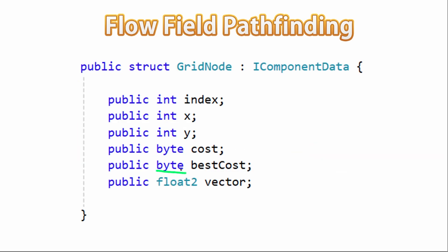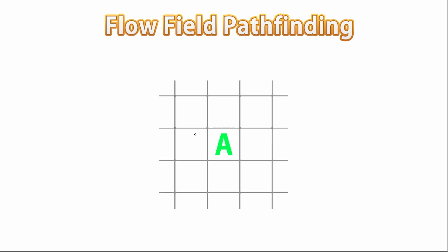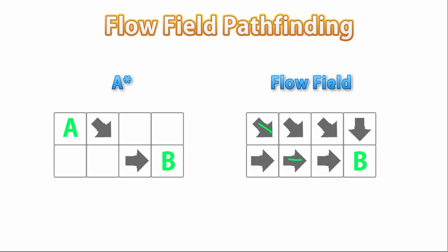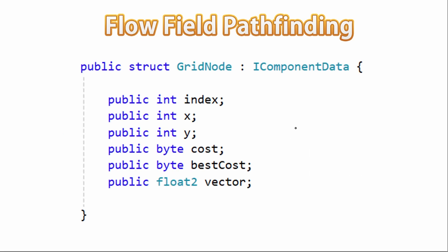Technically we could use an int, float, or whatever else. So that's the cost, and then we have the best cost — this one represents what is the best cost going to a neighbor node from this node. Essentially, let's say we are on this node and we're trying to move to this node, so we're going to set the best cost on this one: it is going to be the best cost from this node plus the cost of making this move. This is how we figure out if going from this node to this node is the fastest path or not — we calculate the new best cost and the one with the lowest cost wins. And finally we have the vector — this one stores a 2D vector that points to the next node. All we need to do is follow the vector underneath that node and eventually we reach the target position.